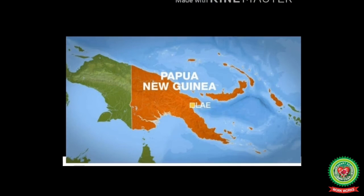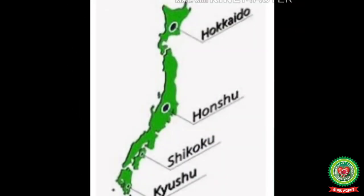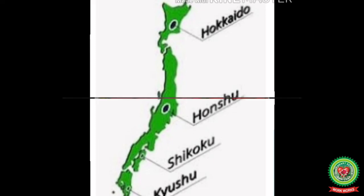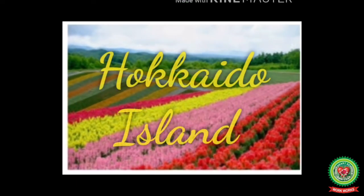Next is Japan. Japan comprises 6,872 islands. Out of these, there are four large islands from north to south: Hokkaido, Honshu, Shikoku, and Kyushu. Nearly 97 percent of Japanese people live on these four islands.